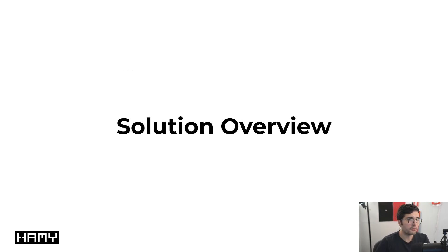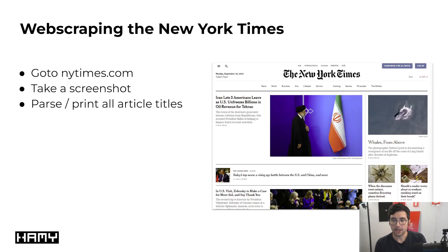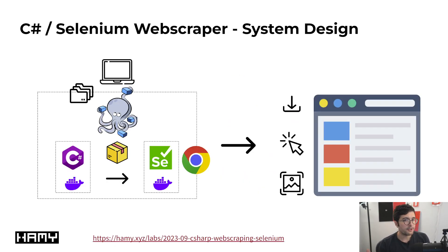At its most basic: you write your C# program, run it on your laptop or computer, and it goes to the web and does stuff — clicks, parsing, whatever you want. The demo project is going to go to the New York Times, take a screenshot of the web page, and then parse and print out all of the article titles it finds. How it actually does this gets quite a bit more complicated when we start looking at dependencies.